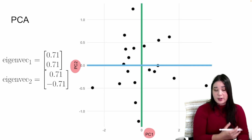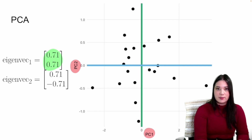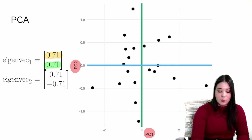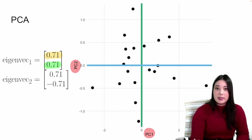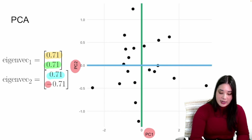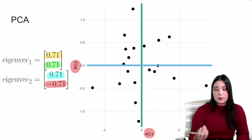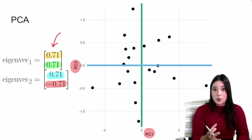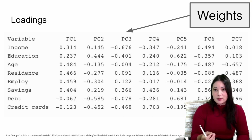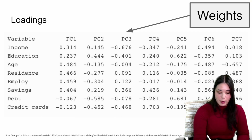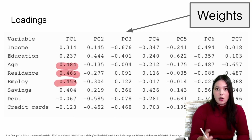Here you can see a transformed plot where instead of raw variables we have our new principal components. The eigenvectors tell us how to create these new features — the loadings. For instance, the first principal component equals 0.71 times original variable x plus 0.71 times original variable y. The second principal component equals 0.71 times x minus 0.71 times y. In more complex situations, the loadings tell us how strongly each original variable is associated with each principal component.